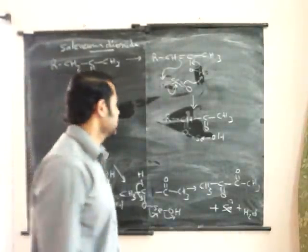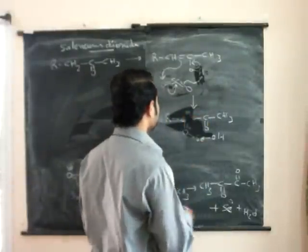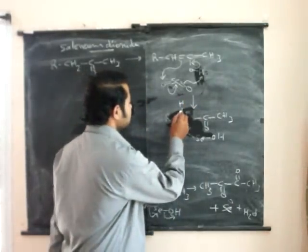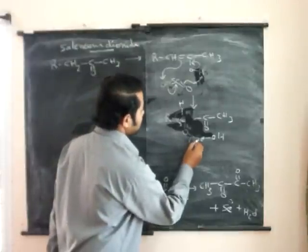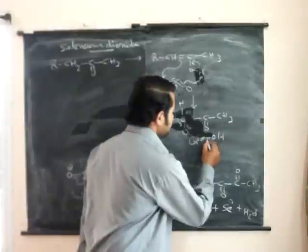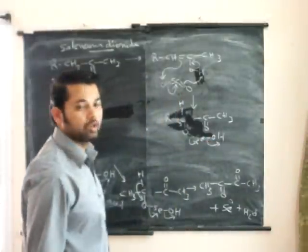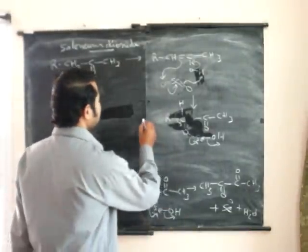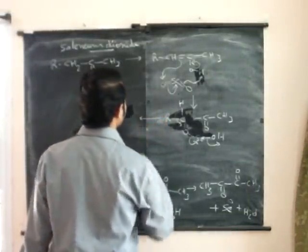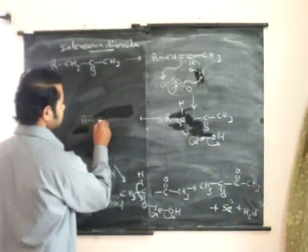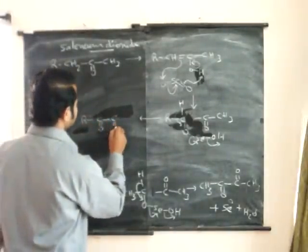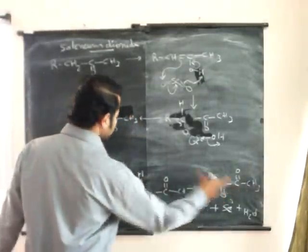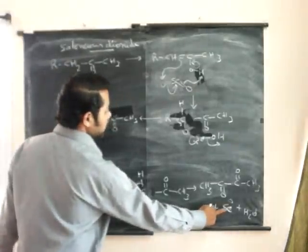That means this is an intermediate. Now this proton is there. This will lose its bonding pair, and this will go up. This H+ and OH- combine to form a water molecule. So that means this compound plus selenium form the products.